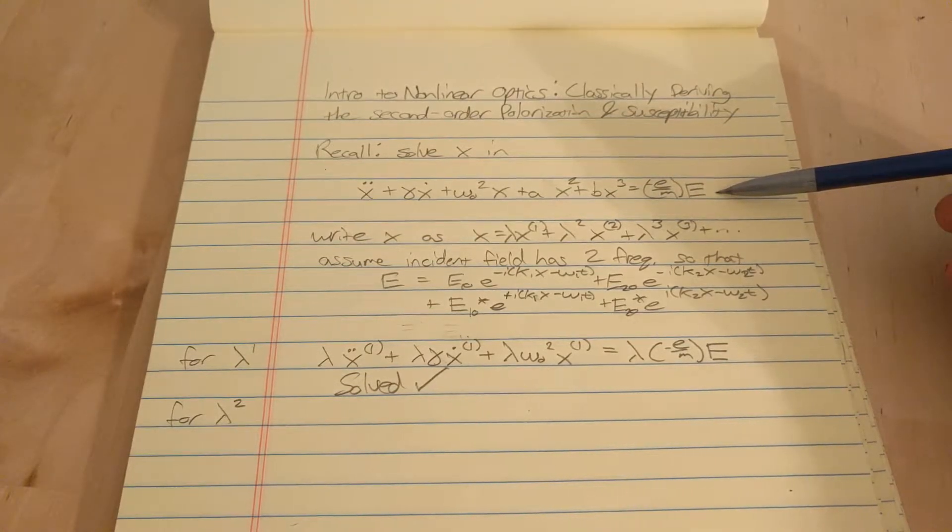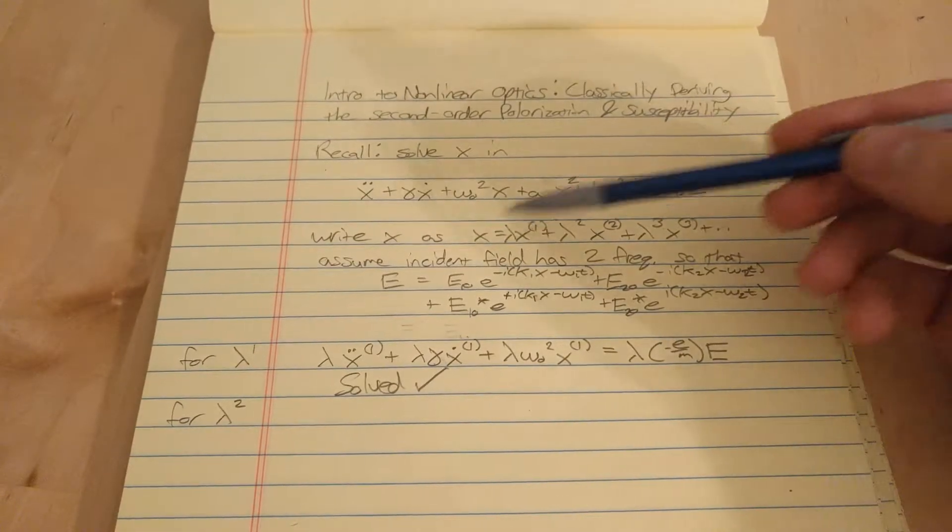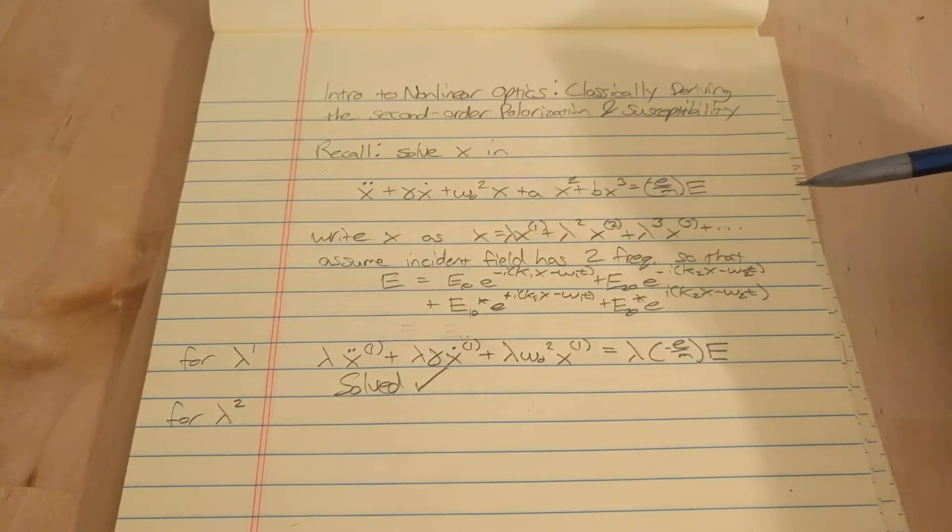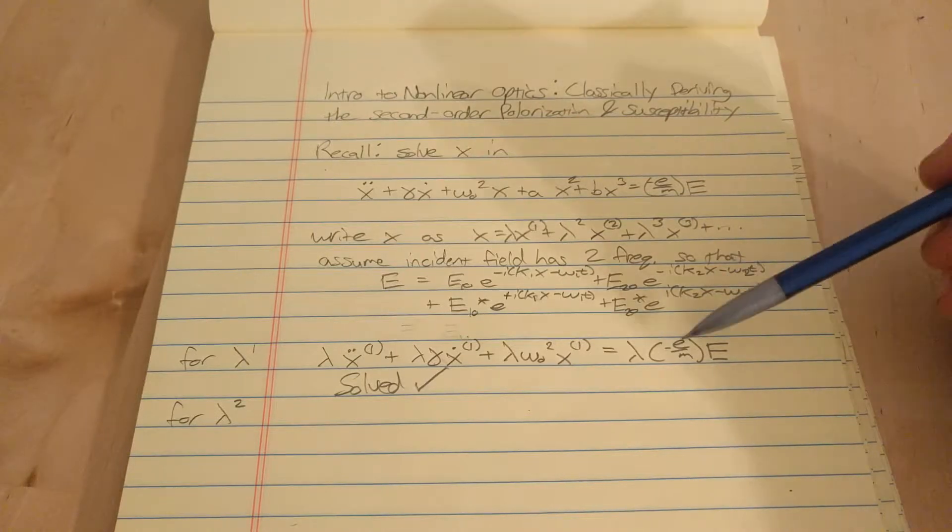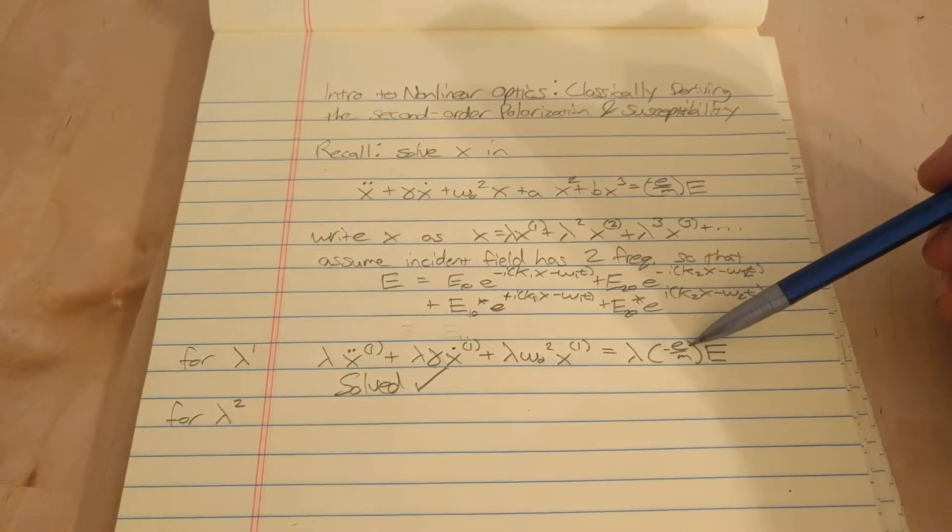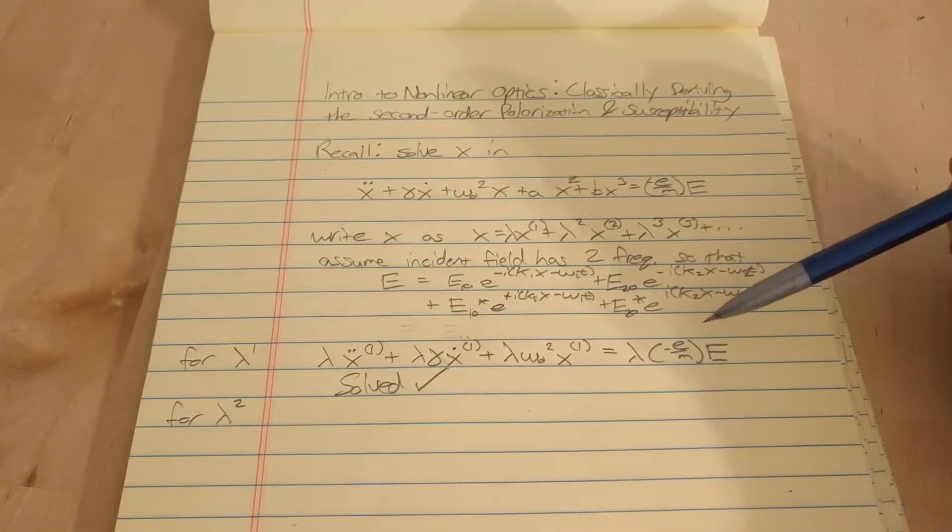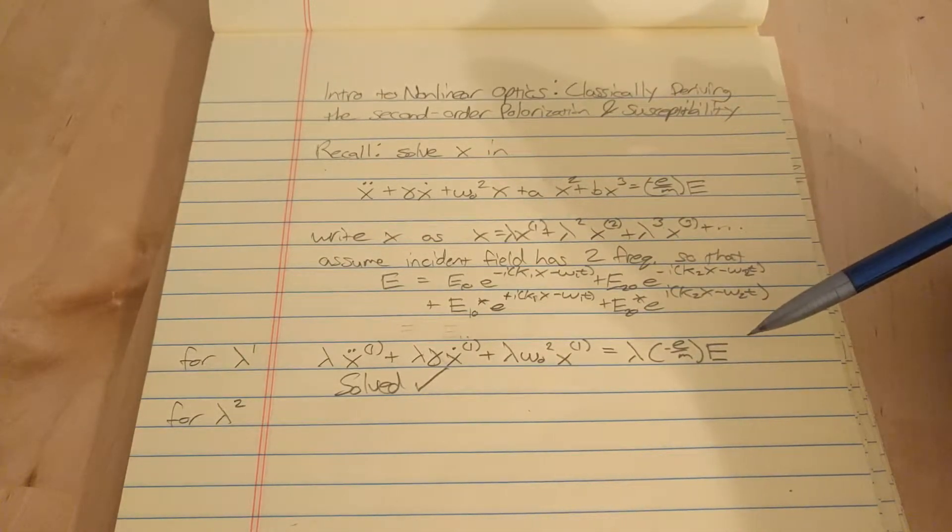Just recall that we're trying to solve the driven damped harmonic oscillator equation for the Lorentz model of the atom, an anharmonic version of the Lorentz model. We write our X like this from perturbation theory, and we're only assuming we have two frequencies right now.